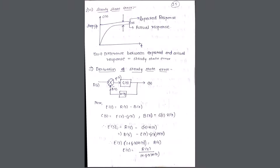So E(s) = R(s) − B(s) = R(s) − C(s)·H(s). Since C(s) = E(s)·G(s), we get E(s) = R(s) − E(s)·G(s)·H(s). Taking E(s) common on the left side: E(s)·[1 + G(s)·H(s)] = R(s), therefore E(s) = R(s) / [1 + G(s)·H(s)]. If you know the diagram clearly and understand the steps, you can derive this expression for E(s).